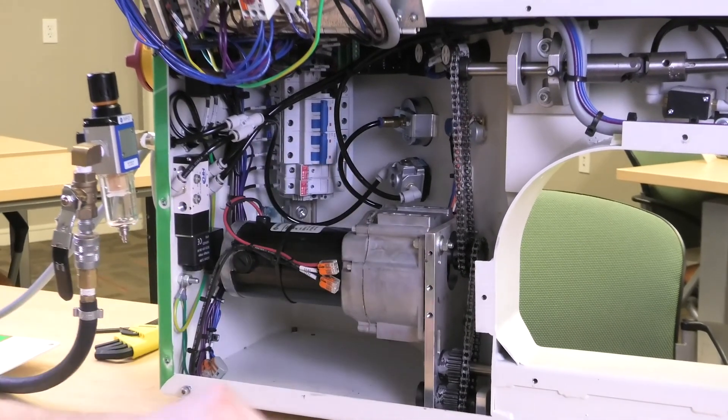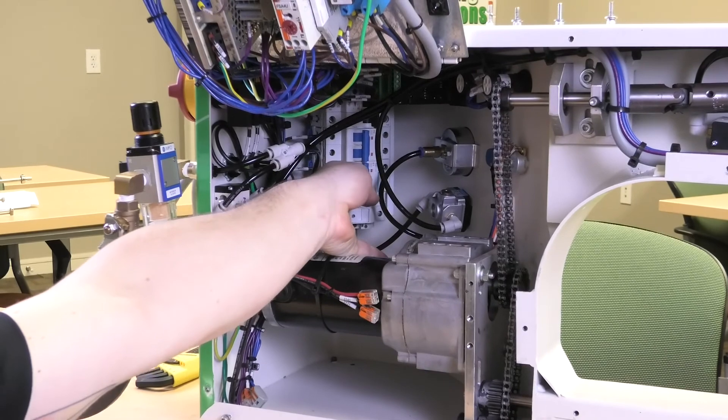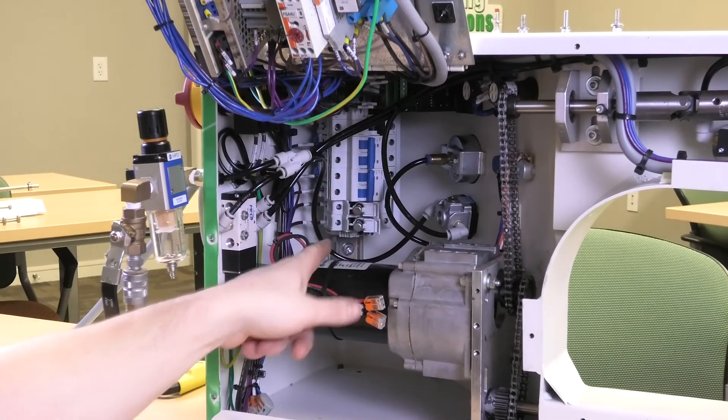In the back of the machine, you can see the breaker panel. And then also back here, you have two fuses.